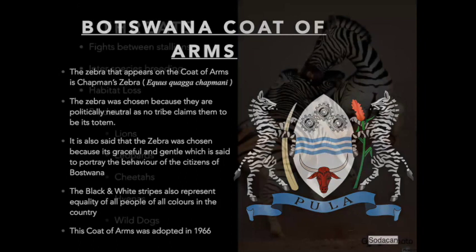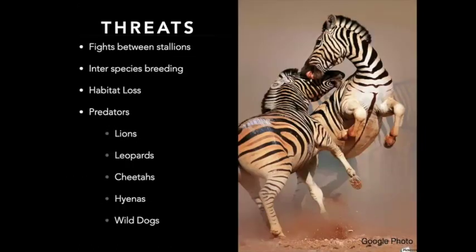You can see zebras biting in the picture, with prominent shadow stripes visible. Threats to zebras include fights between stallions, which can cause serious and even fatal injuries. Interspecies breeding is a risk among the closely related subspecies of the plains zebra — if subspecies interbreed, you could lose individual subspecies entirely. Habitat loss caused by human development and urban settlements destroys prime zebra habitat. Predators include lions, leopards, cheetahs, hyenas, and wild dogs.